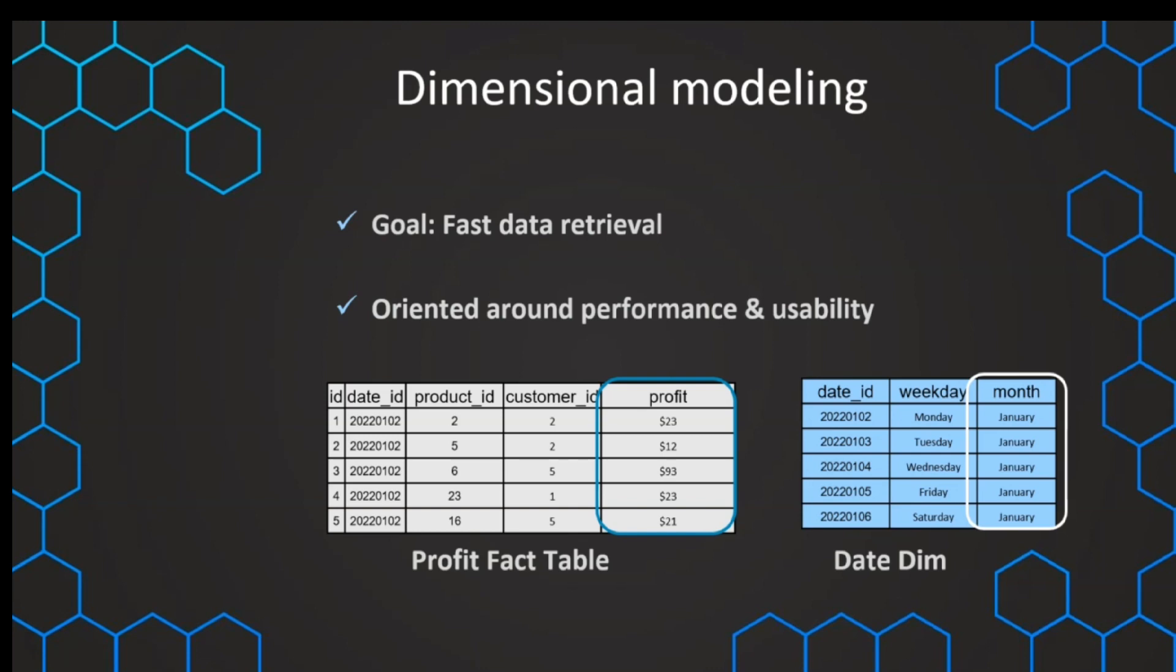And we don't have to search in hundreds of columns of one fact table, and this is making things much easier for the users. So now we can just take the profit and slice and dice it, for example, by the month or by the weekday.